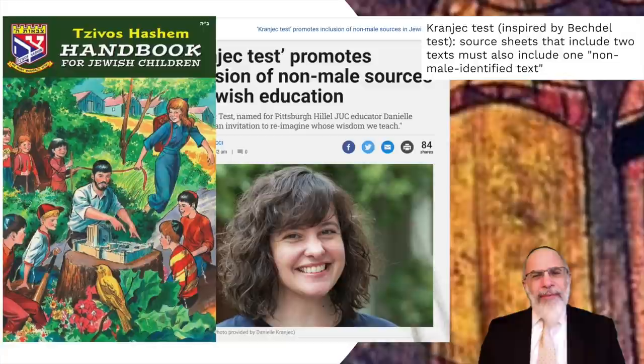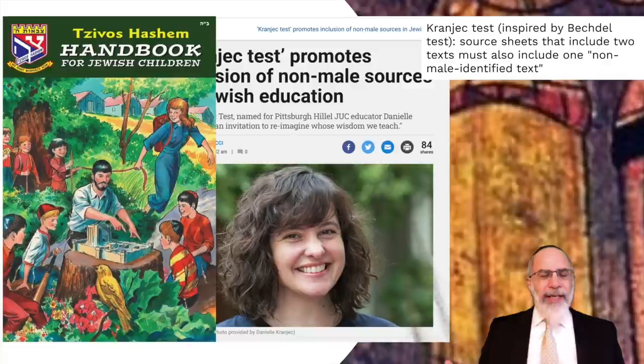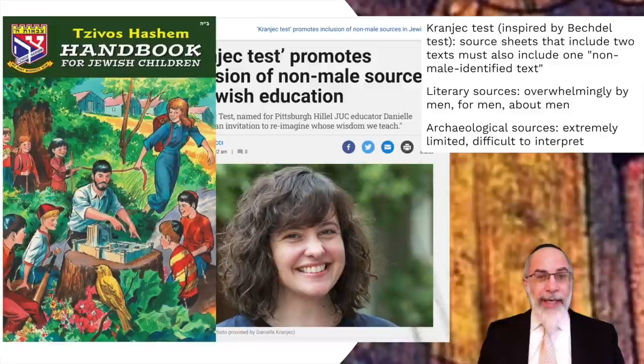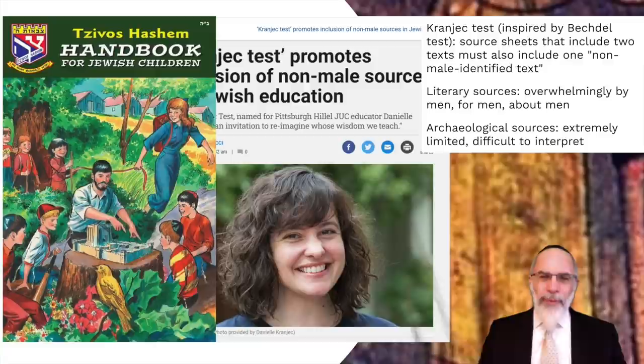When we come to our challenge — trying to understand the experience of women in ancient Israel — the difficulty is that the vast majority of our sources are by men, for men, and about men. This is especially true in the literary realm. If we look at a classical rabbinic text like the Mishnah, it has a whole section called Nashim, which is all about women. But not really, because it's mainly describing how men relate to women: marriage, divorce, levirate marriage, and so on.